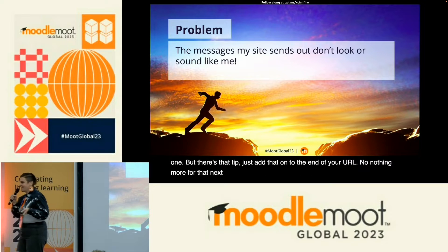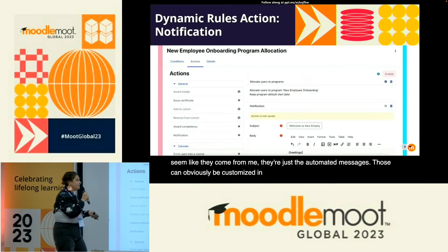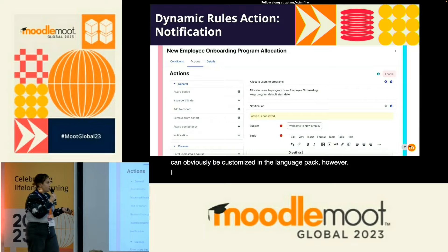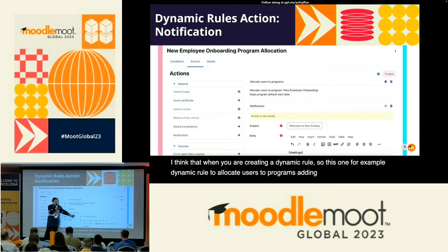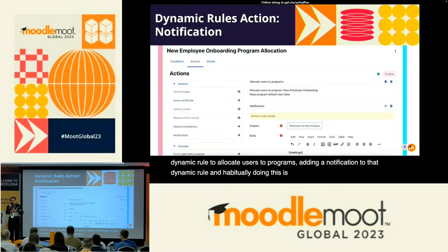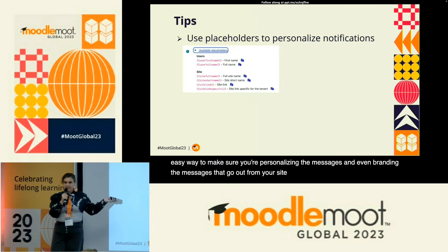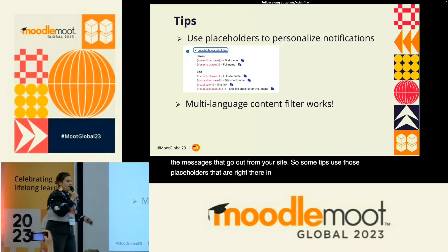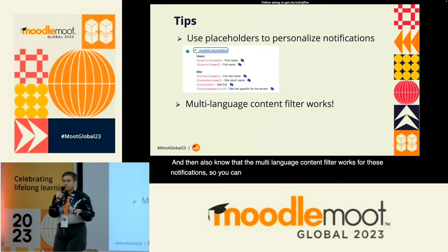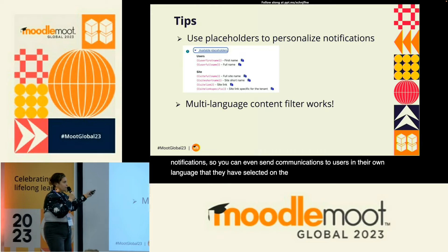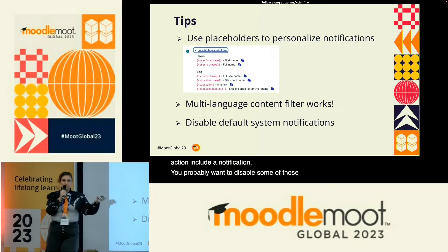Next problem: the messages that my site sends out don't seem like they come from me — they're just automated messages. Those can be customized in the language pack, however when you are creating a dynamic rule — for example, a dynamic rule to allocate users to programs — adding a notification to that dynamic rule and habitually doing this is a really wonderful and easy way to personalize and even brand the messages that go out from your site. Use those placeholders right there in notifications to further customize, and know that the multi-language content filter works for these notifications so you can send communications to users in their own selected language. Disable some of those default system notifications so you're not spamming users.